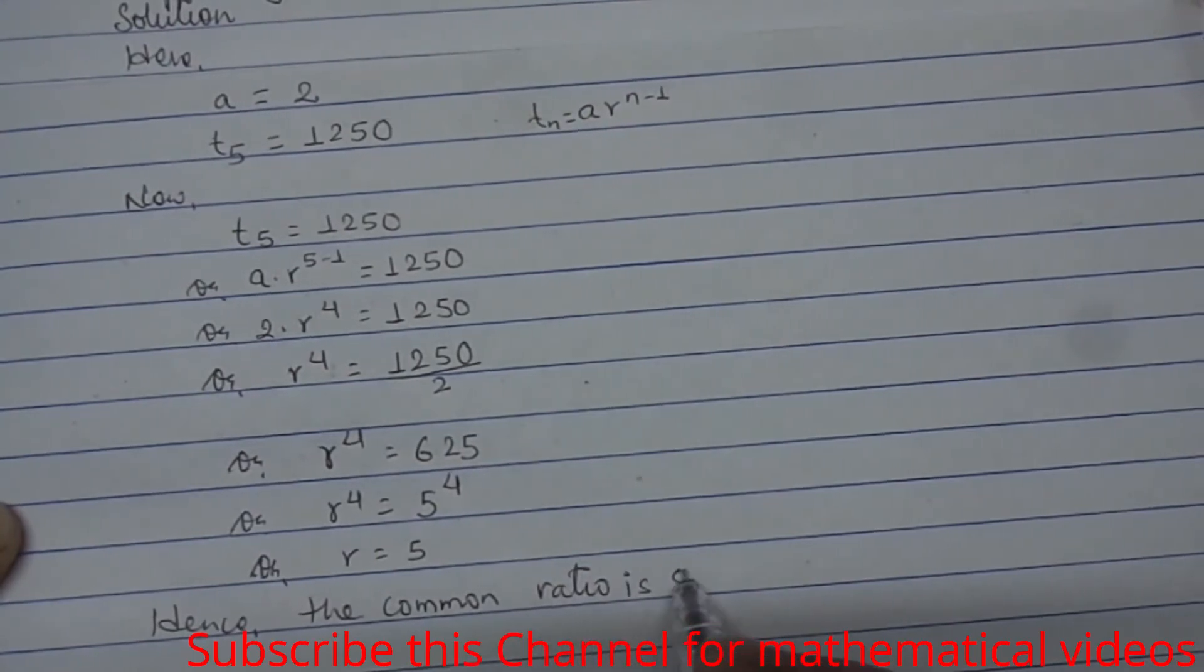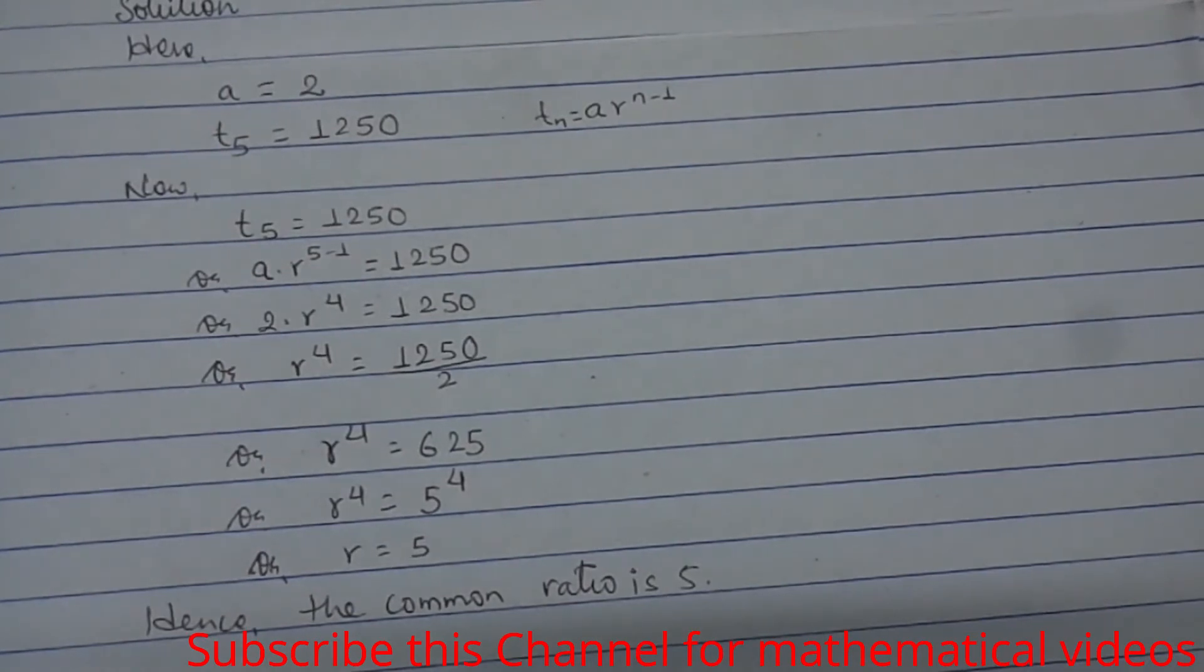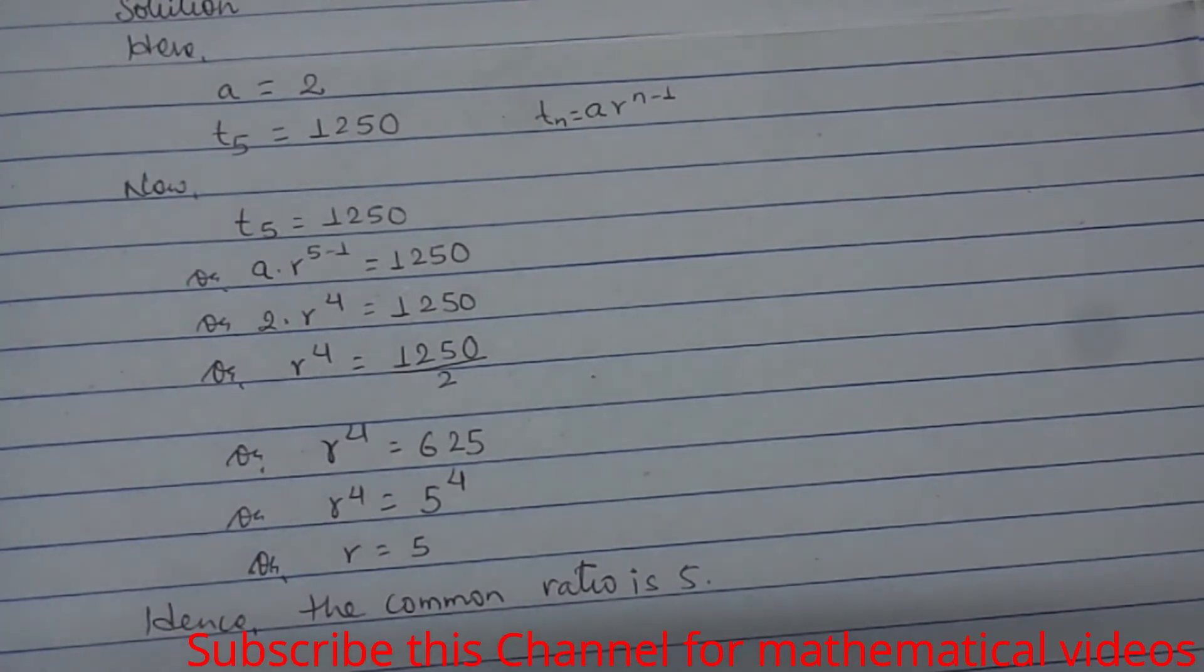In this way, we can find the common ratio when the first term and any term of a geometric progression are given.